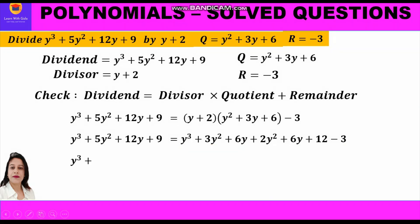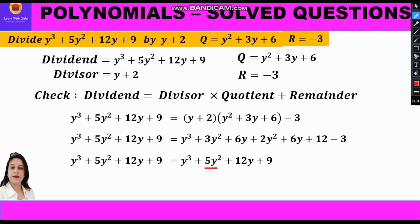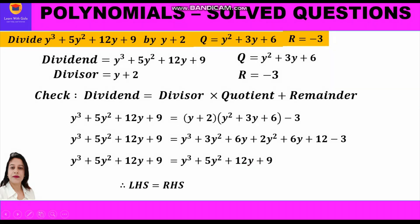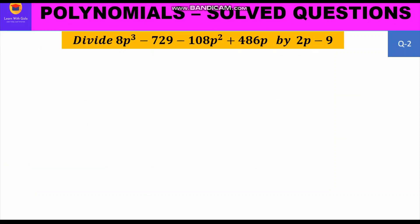Collecting like terms on the right-hand side: y³, then 3y² + 2y² = 5y², then 6y + 6y = 12y, then 12 − 3 = 9. This gives y³ + 5y² + 12y + 9, which is exactly equal to the left-hand side — the dividend. Our answer is correct; the division algorithm is satisfied.